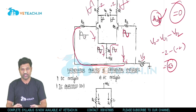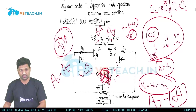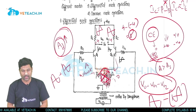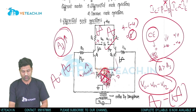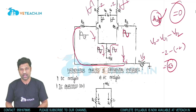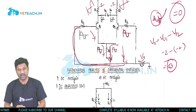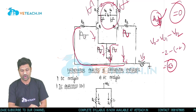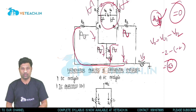In summary: in differential mode operation, two different input signals are provided, no signal flows through RE so RE can be eliminated, and an output exists. In common mode operation, same inputs are provided, a signal flows through RE acting as feedback, Ac decreases, and there is no output. In the next class, we will analyze the expressions for Ad (differential gain) and Ac (common mode gain).